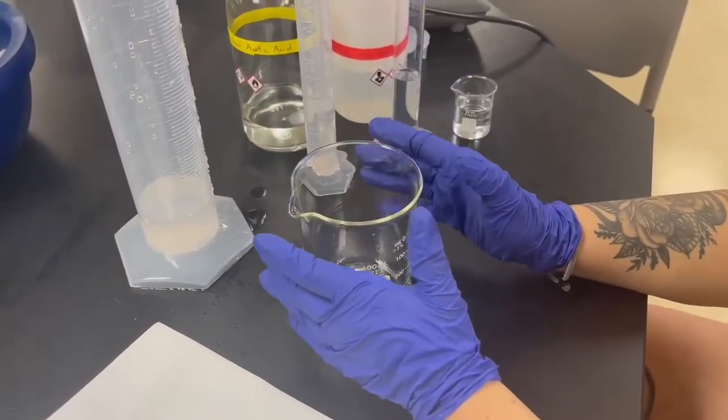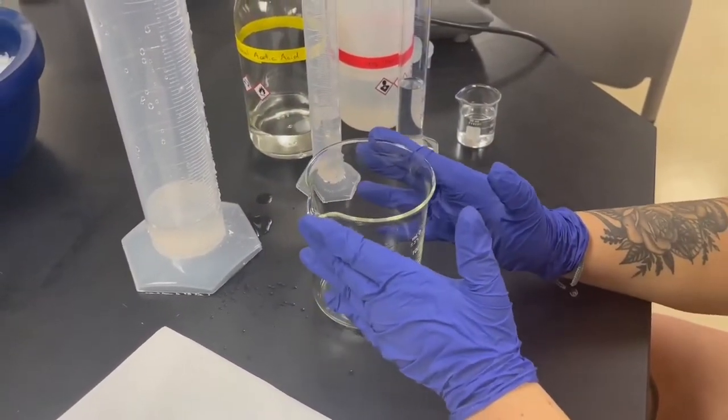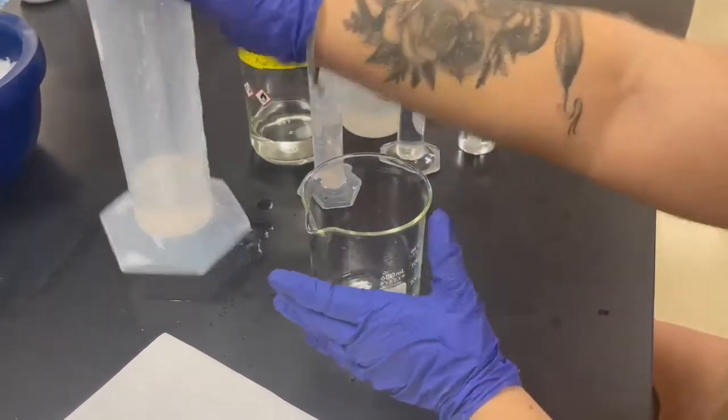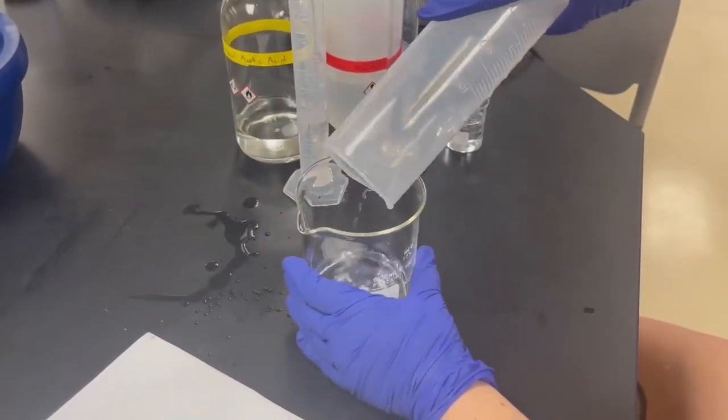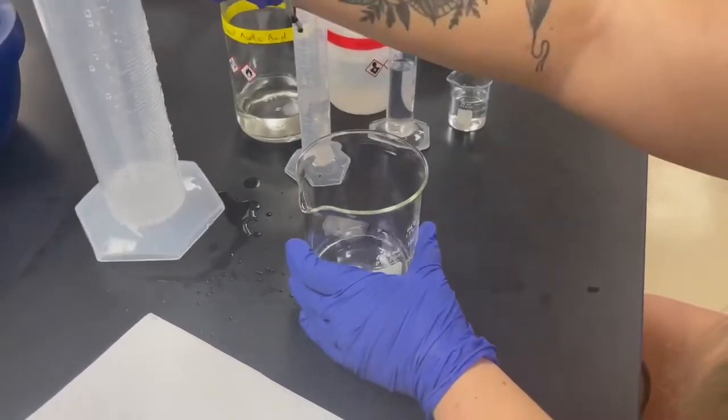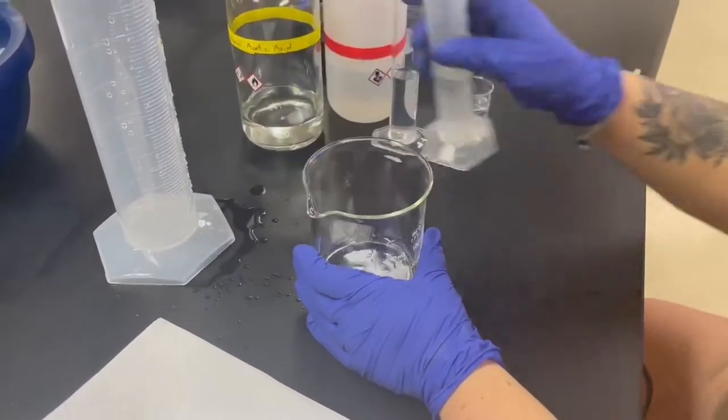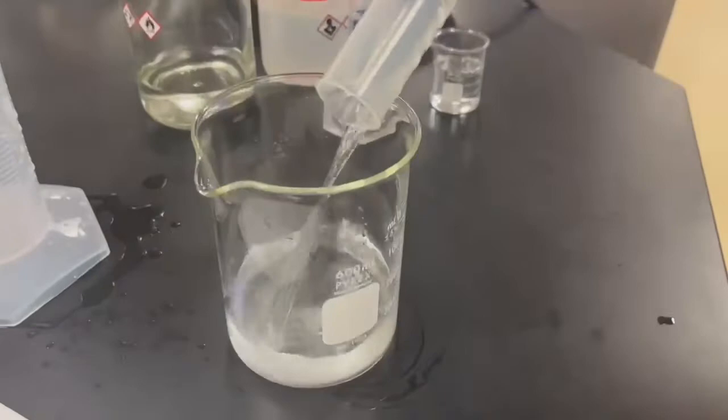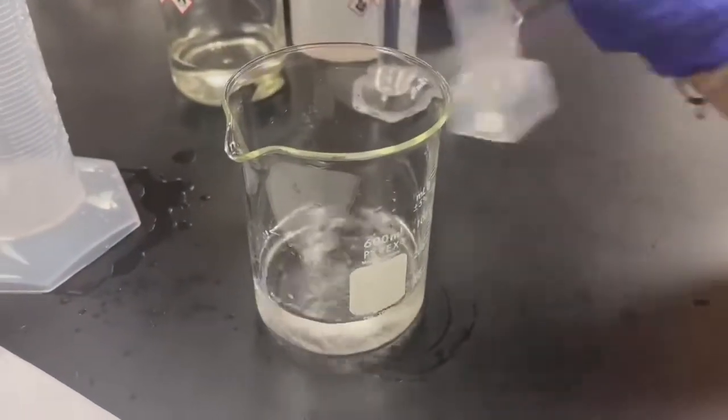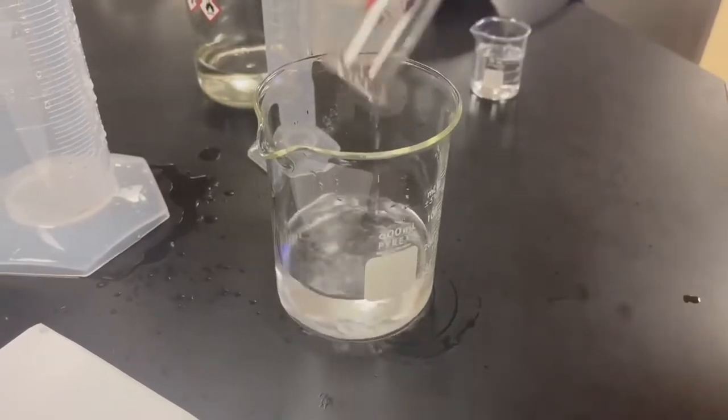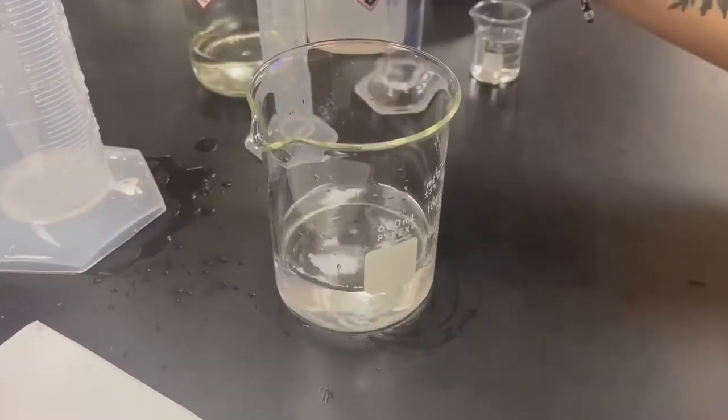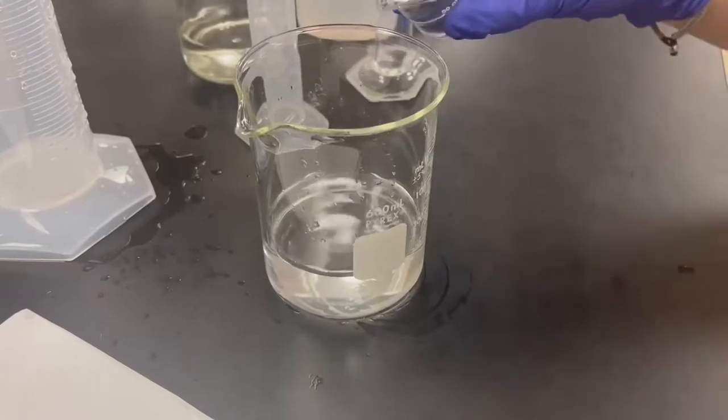The next step in preparing for your silver stain process is creating the fixative enhancer solution, which is a mixture of 120 milliliters of deionized water, 40 milliliters of acetic acid, 40 milliliters of 100% methanol and 40 milliliters of fixative enhancer concentrate.